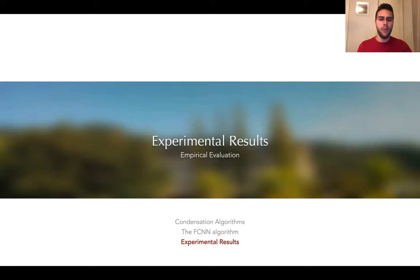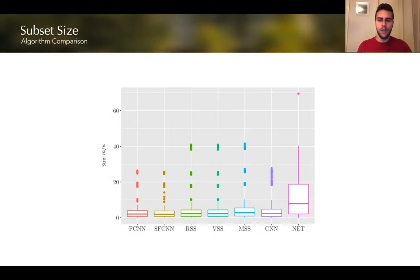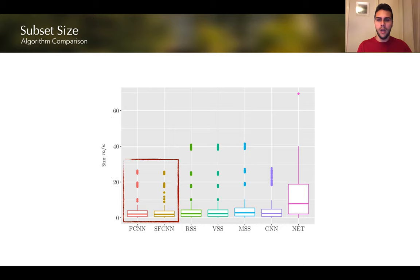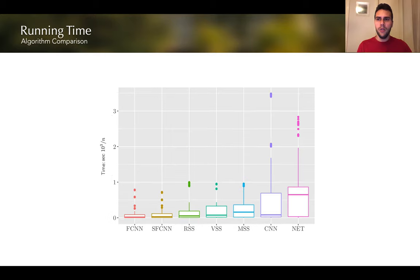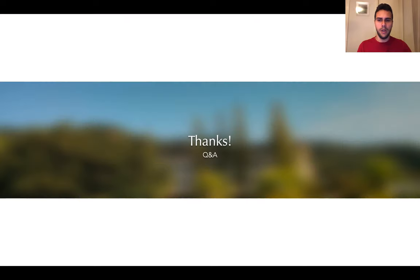We also provide experimental results on different benchmarks, and our results show that the modification from FCNN to SFCNN does not affect its practical behavior, either in terms of the size of the selected subset or in terms of its running time.